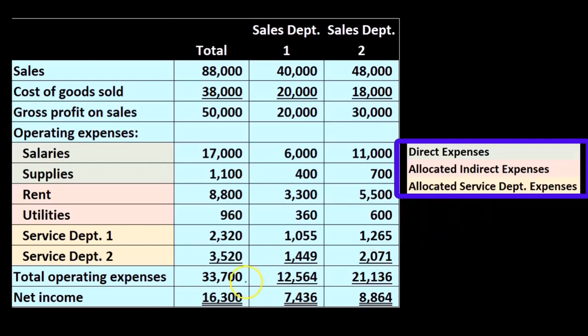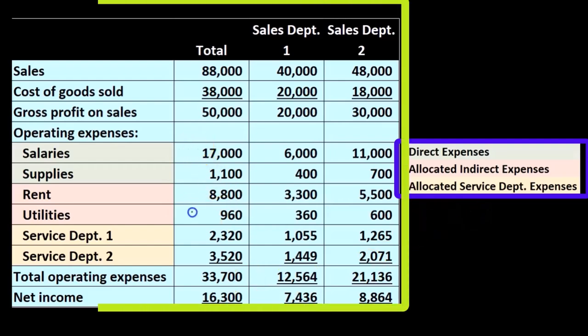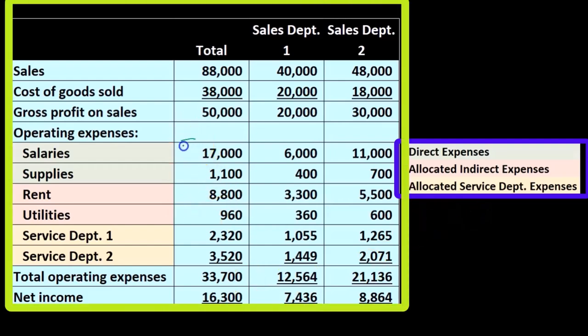So if we add those up, we get our total expenses. Adding up all these expenses, the gross profit minus the operating expenses gives us, of course, the net income.